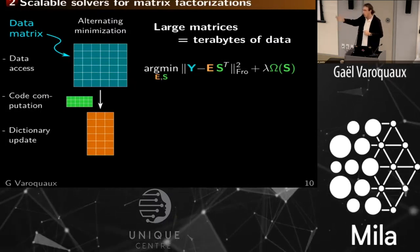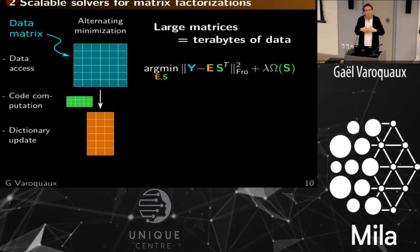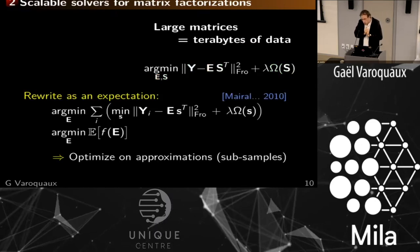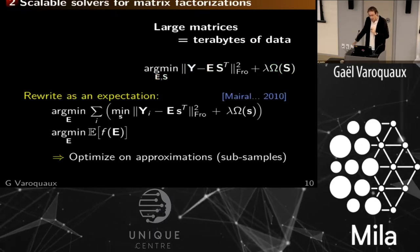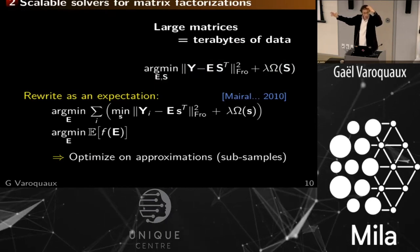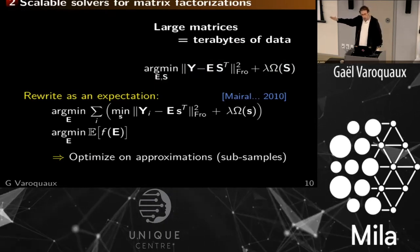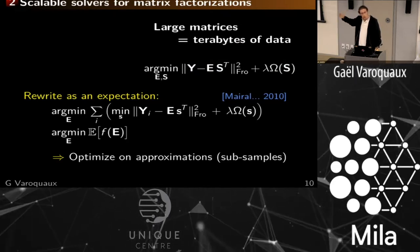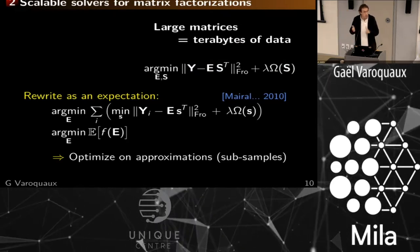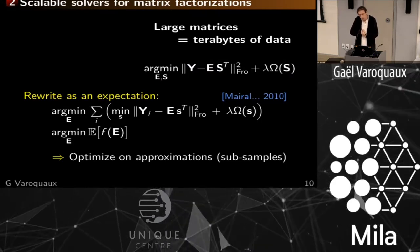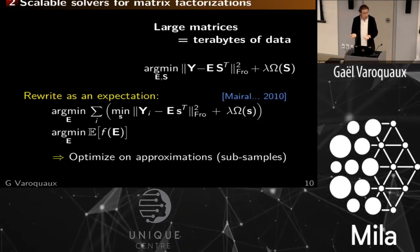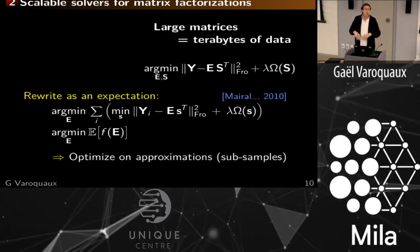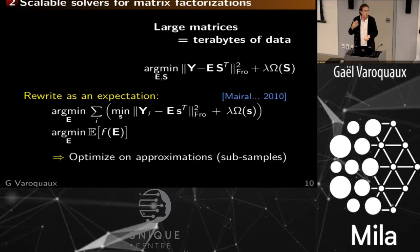This is a terrible strategy because it's a batch strategy — you need to go over your data all the time, so if you have somewhat large data it's incredibly slow. What Julien Mairal did in 2010 is rewrite this problem as an expectation, writing the Frobenius norm as a sum of individual norms on each sample, because the problem is separable. This sum can be treated as an expectation, enabling stochastic optimization on subsamples.